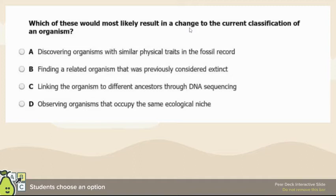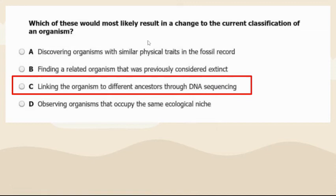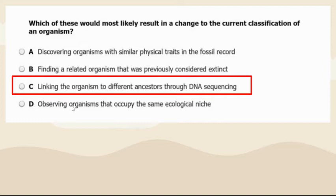Which of these is likely to result in a change to the current classification? The answer is linking an organism to different ancestors through DNA sequencing. Observing a similar physical trait or extinct organism might give additional information, but DNA sequencing is how you officially establish fact — it's not just an observation or opinion.